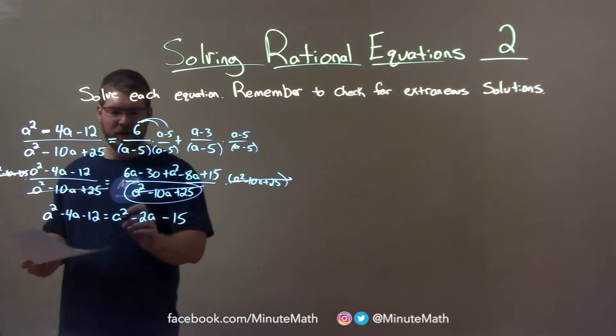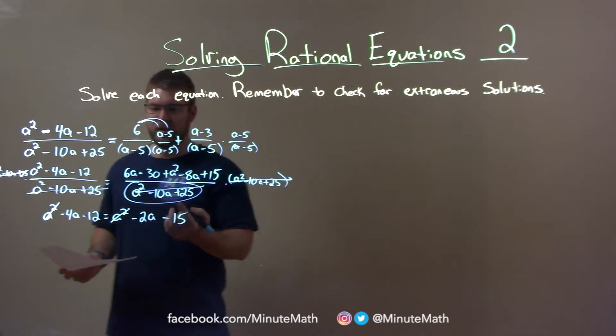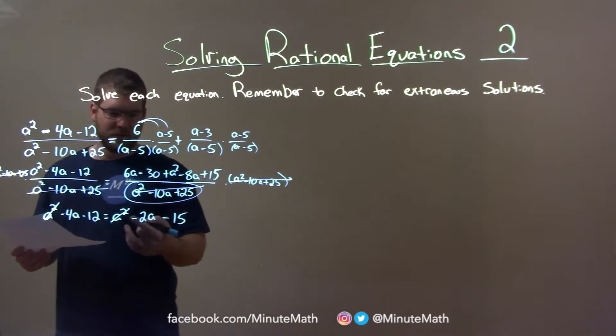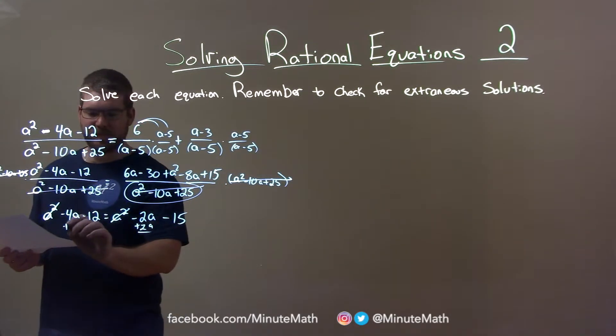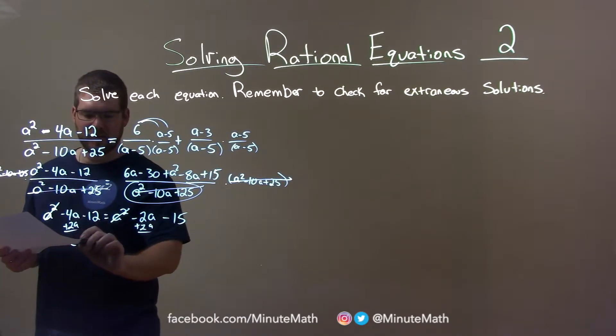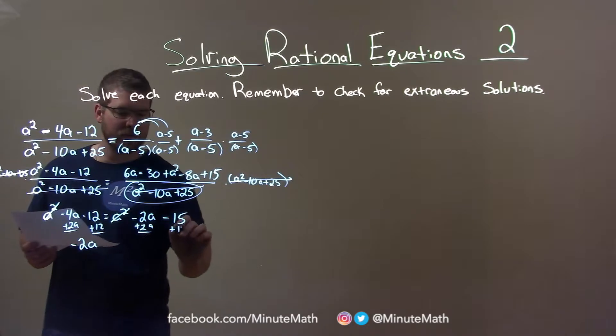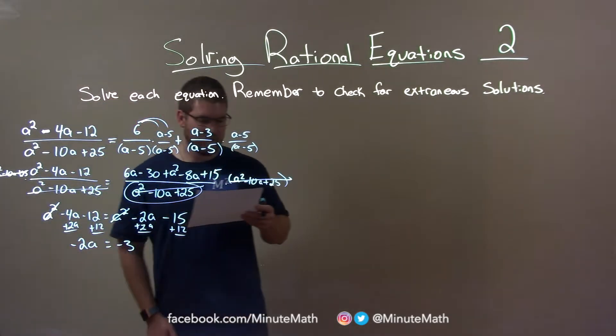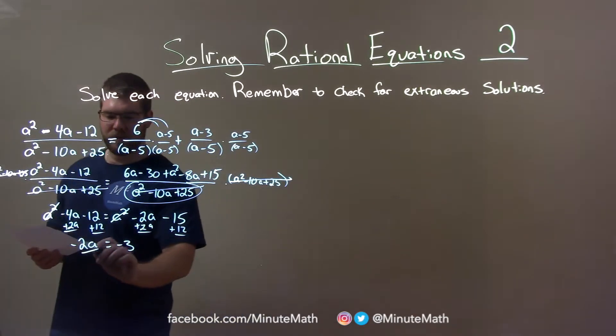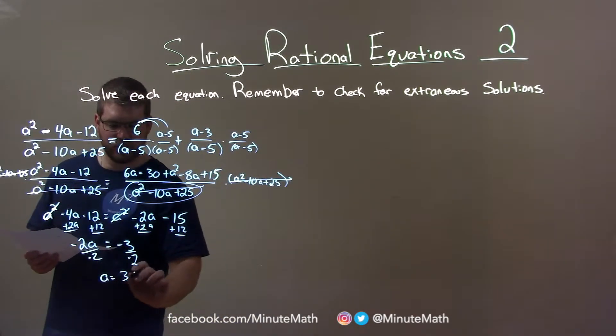Now let's get all the like terms. The a squared is going to cancel on both sides. Let's bring the 2a over, so add 2a to both sides. We have a negative 2a over here. Let's add 12. Negative 15 plus 12 is negative 3. Divide both sides by negative 2, and a equals positive 3 halves.